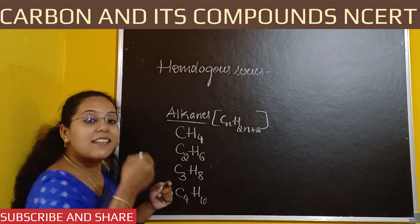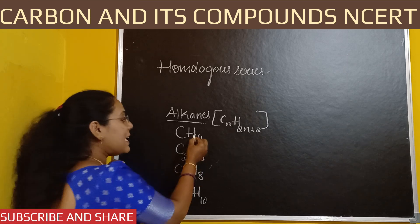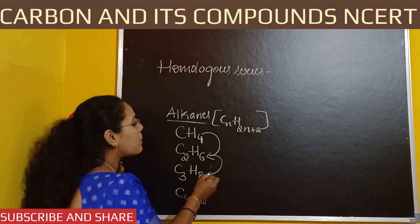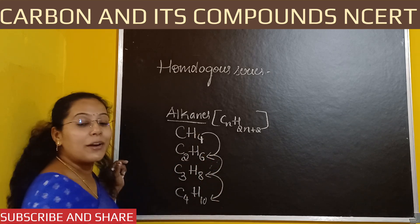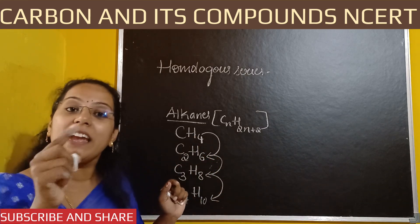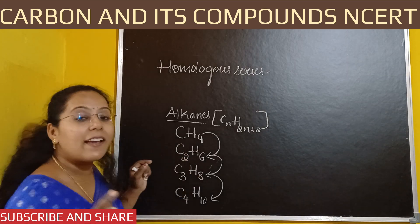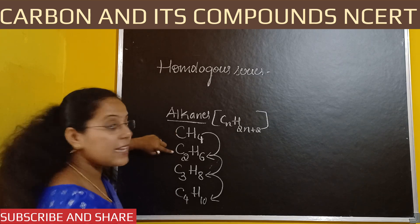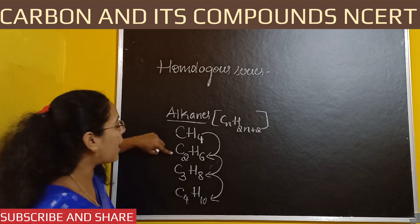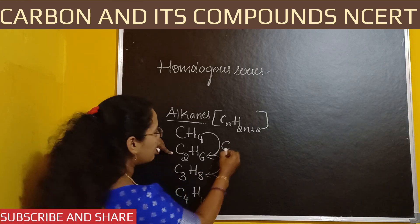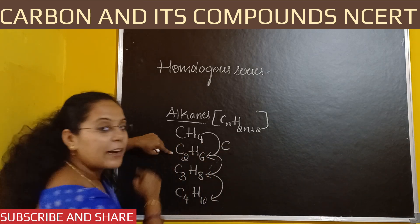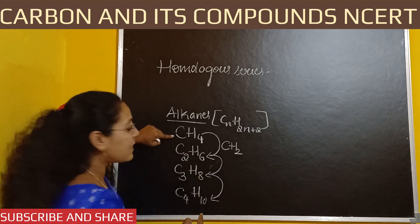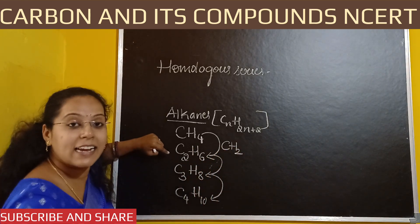Now observe one more thing: successive members — the next after next — differ by CH2. For example, methane and ethane: methane has 1 carbon, ethane has 2 carbon — that is 1 carbon difference. Methane has 4 hydrogen, ethane has 6 hydrogen — that is 2 hydrogen difference. So they differ by CH2.